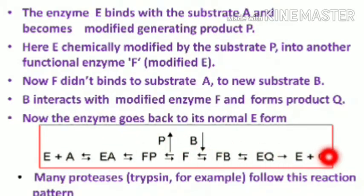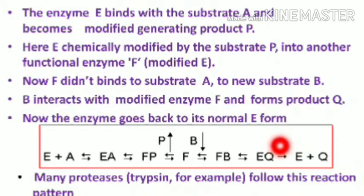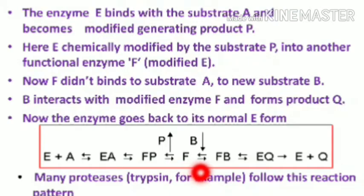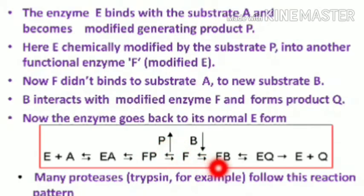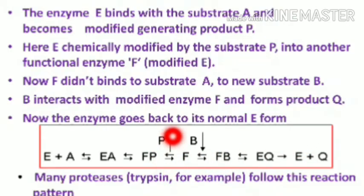Enzymes following this pattern are particularly those involved in cascade or chain reactions. Many blood clotting enzymes and digestive enzymes follow this pattern. Examples include trypsin, chymotrypsin, and elastase. These enzymes modify themselves to bind to a second substrate, release the first product, form a new product, and then regain their original configuration — their mechanism is like a ping pong ball, hence the name ping pong mechanism.